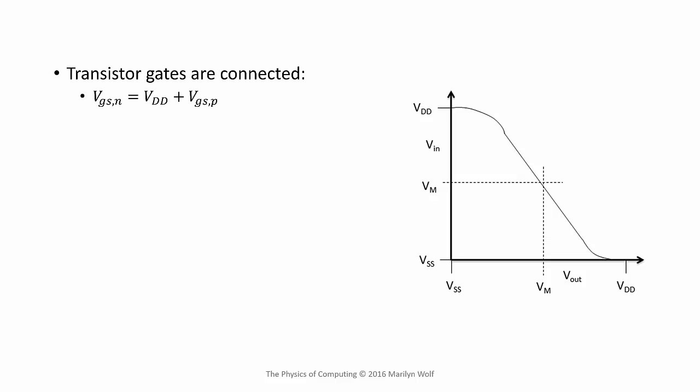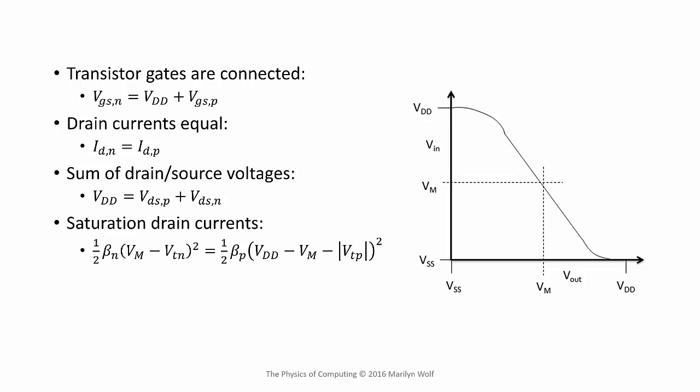So our first step in analyzing the middle voltage is to recognize that the two transistor gates are connected to each other. We also know that the drain currents are equal because the two transistors are connected in series. And we know that the sum of the drain source voltages of the two transistors add up to the power supply voltage. So now we can substitute in the drain current equations and solve for the middle voltage. You can see that this depends upon the square root of the ratio of the betas of the two transistors.